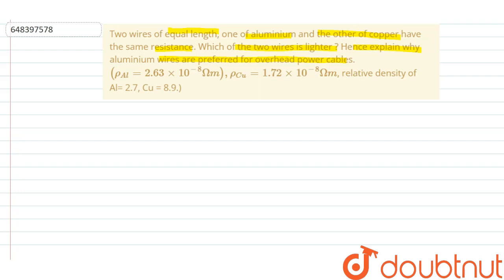Since according to the question both aluminum and copper have the same resistance, we can write R_al = R_copper = R. Similarly, both wires have the same length, so we can write length of aluminum equals length of copper equals L. We know that the resistance formula is given by R = resistivity × length / area.